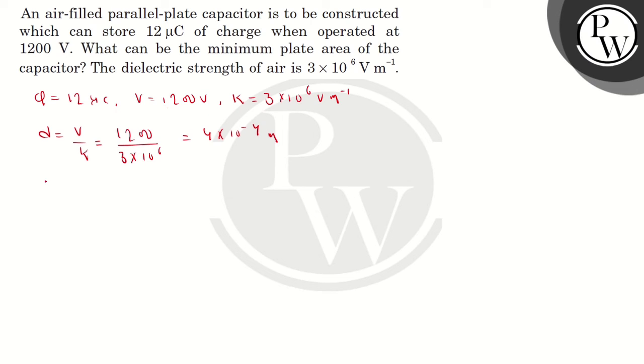Now we know that Q is equal to CV, which implies that C is equal to Q by V. We have given charge and we have given potential. So charge is given as 12 × 10^-6 divided by 1200. It comes out to be 1 × 10^-8 Farad.